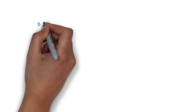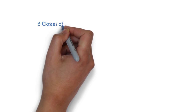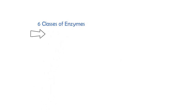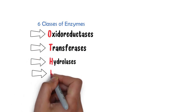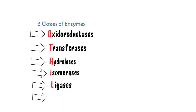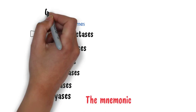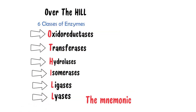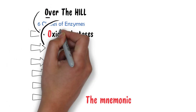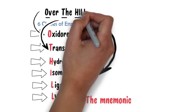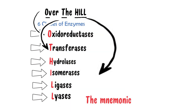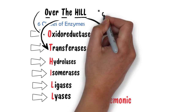So let's get started. As you know, enzymes are classified into primarily six categories: oxidoreductases, transferases, hydrolases, isomerases, ligases, and lyases. We have a very simple mnemonic to remember this — the mnemonic is 'Over the Hill.' O represents oxidoreductases, T represents transferases, H represents hydrolases, I represents isomerases, L represents ligases, and the second L represents lyases.